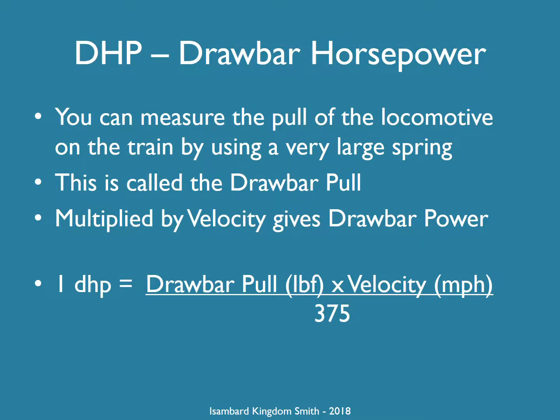You can measure how hard the locomotive is pulling on the train using a very large spring, usually inside something called a dynamometer car. This pull or force is called the drawbar pull because you measure it at the drawbar that connects the locomotive to the rest of the train.